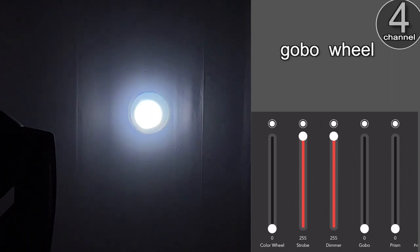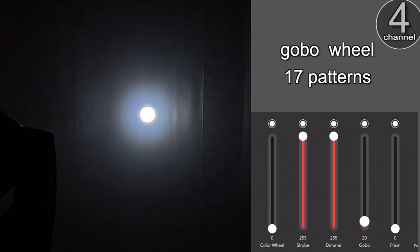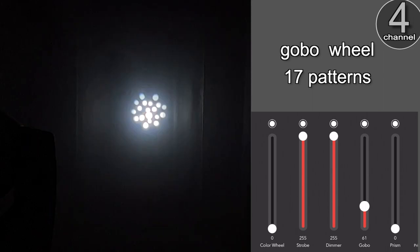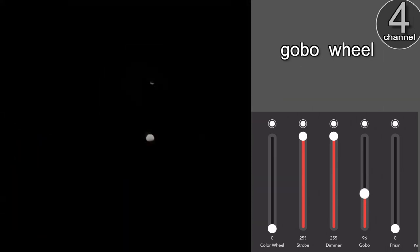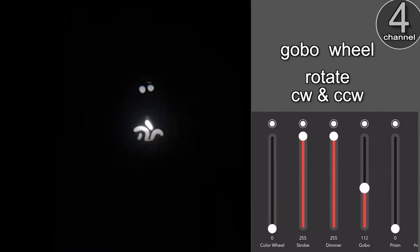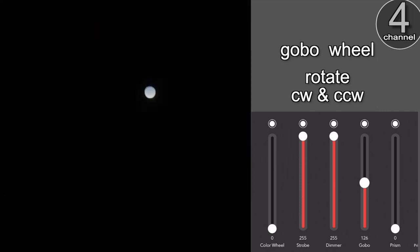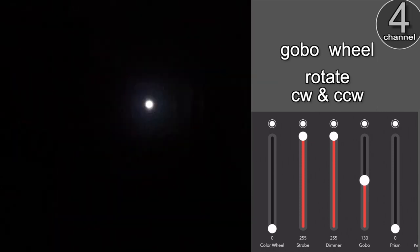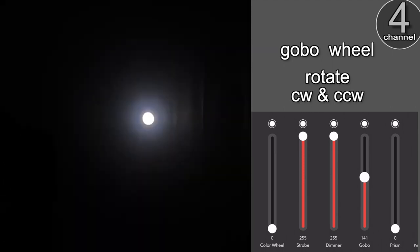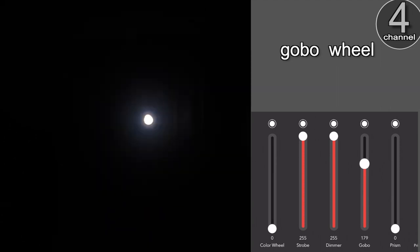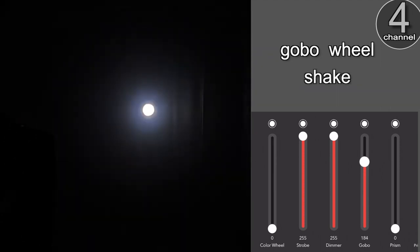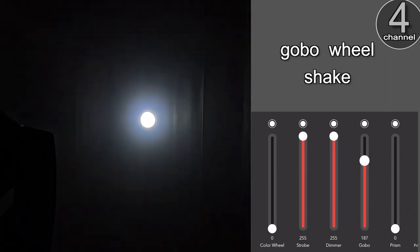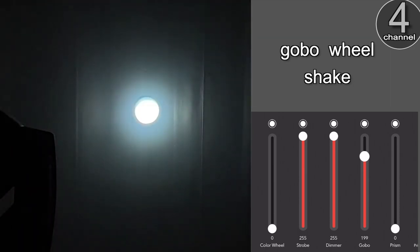Channel 4 lets you choose from 17 different gobo patterns. In the higher values, you can rotate through the patterns really quickly counter-clockwise. And then as you increase the values slower, and then it's still higher values clockwise from slow to fast. And in the very highest values, you can shake each one of the patterns slow and fast, depending on the value that you send.